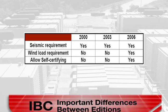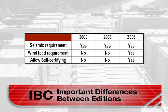The code has gone through three editions in recent years, and there are significant differences in the latest edition of the IBC compared with earlier versions. Both seismic and wind requirements have become more stringent. Also worth noting is that vendors can self-certify their products with some conditions.